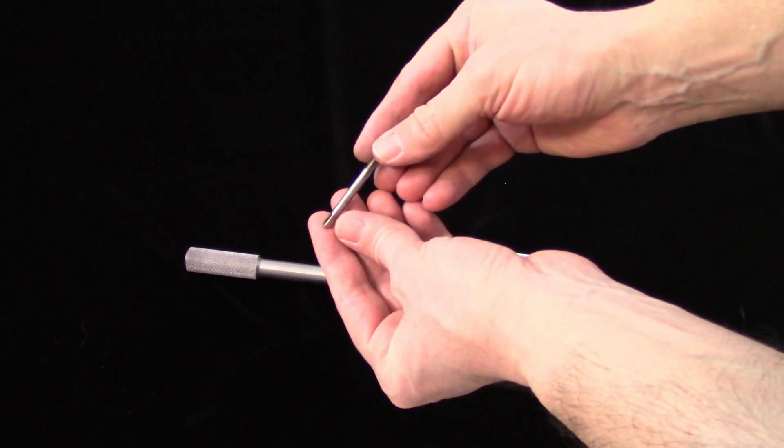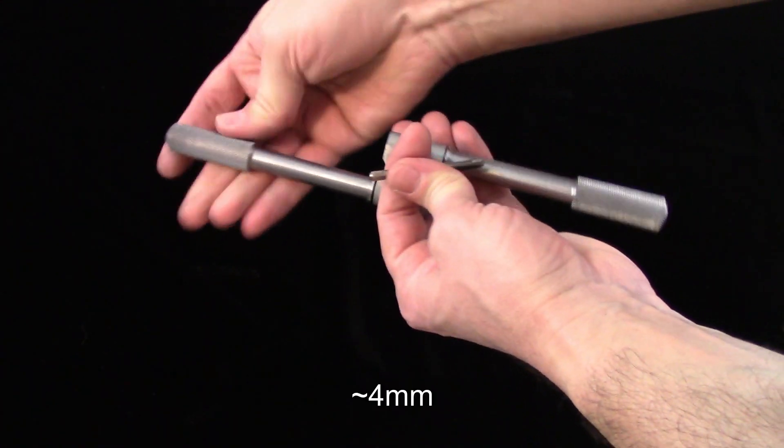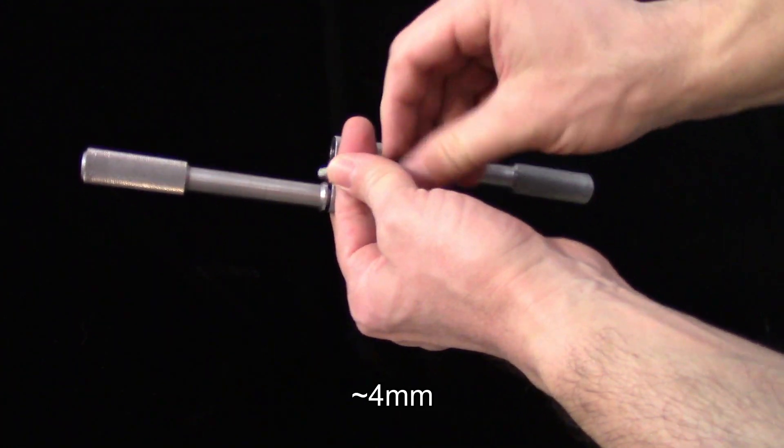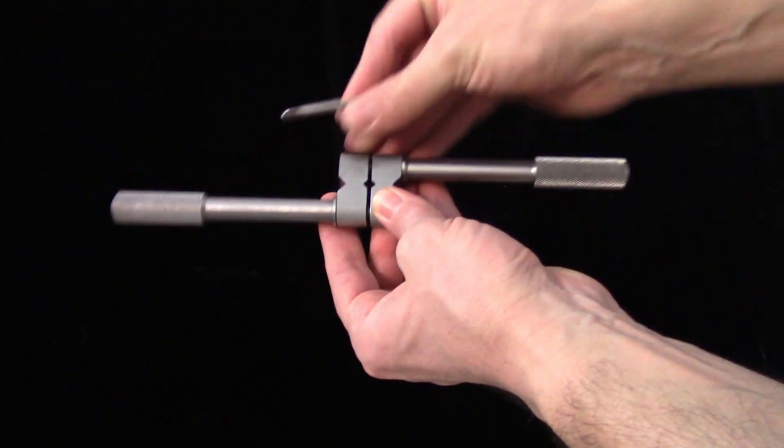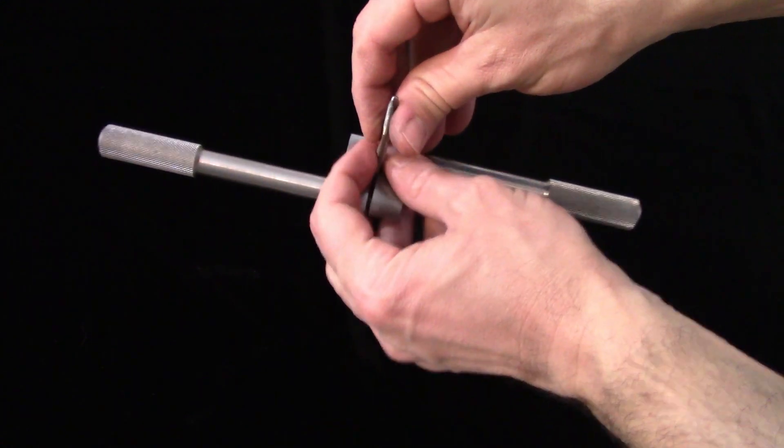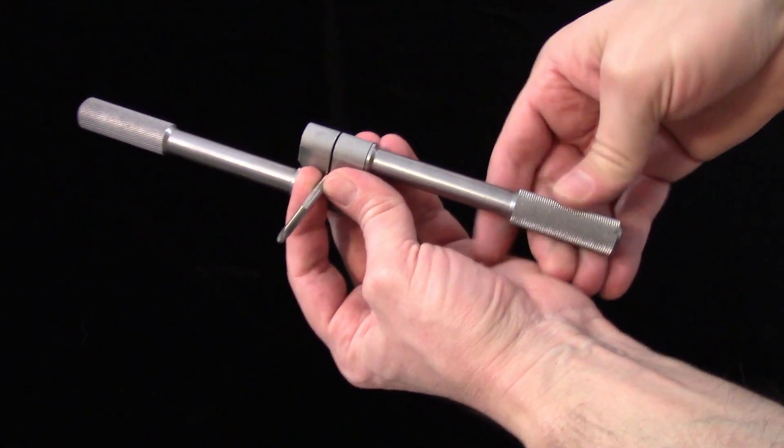On the smaller end, you can go down to a number 8 tap, which fits in with the two jaws tied up against each other. This is a number 10, which leaves you a little bit of a gap, and this is one of the more common taps that I use.